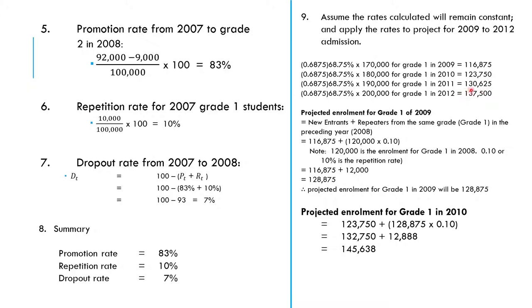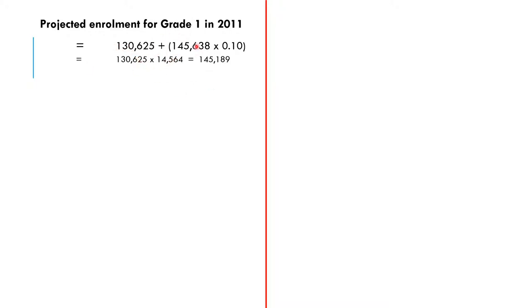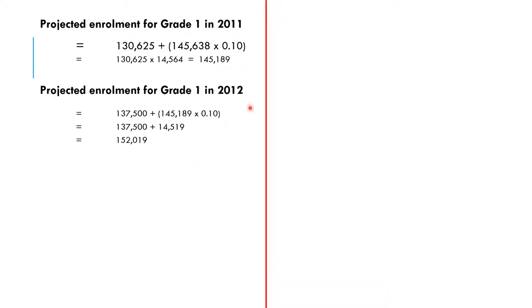For Grade 1 in 2011, the new entrants are 130,625. The repeaters are 10% of the 2010 enrollment of 145,638, giving approximately 14,564. Adding these gives the projected Grade 1 enrollment for 2011: 130,625 + 14,564 = 145,189. For 2012, the new entrants are 137,500, and repeaters are 10% of 145,189 = 14,519, giving a projected enrollment of 152,019.